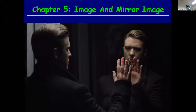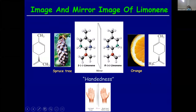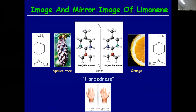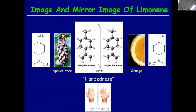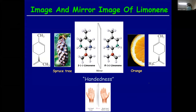The most common mirror image molecule we find is limonene. Limonene is amazing because we find it in everyday life and it has some very similar uses. Pretty much this is going to be oranges and lemons. Now limonene's structure has one chiral carbon.